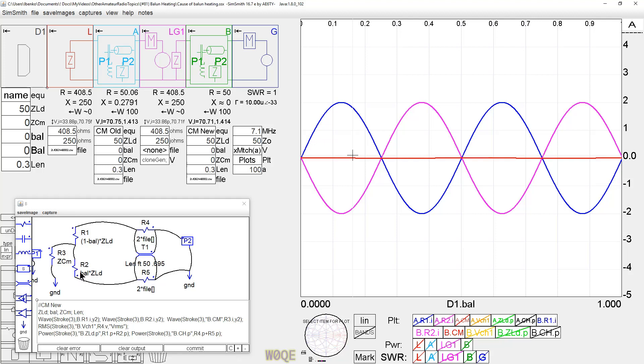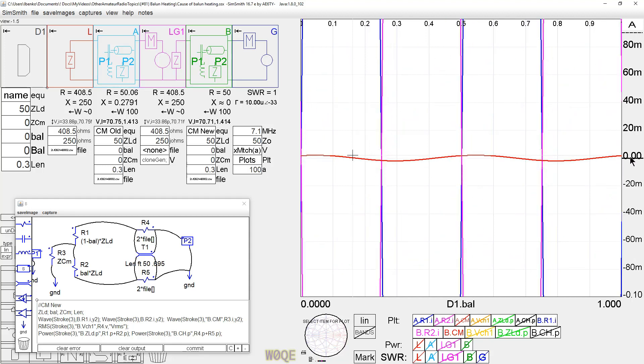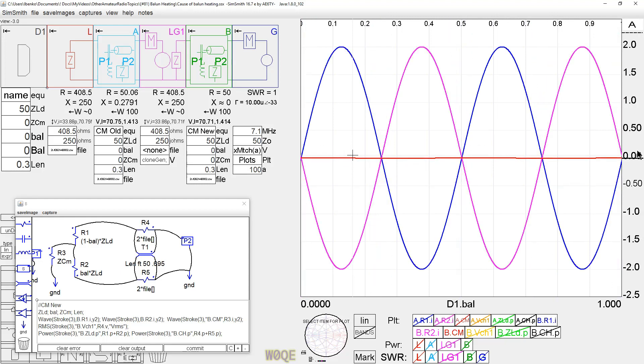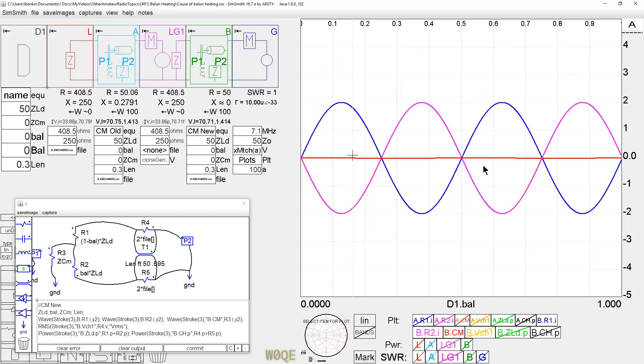So the blue and the pink trace are the current through R1 and R2. And that's the differential current. They're equal, they're out of phase, equally amplitude out of phase. And the amplitude is identical. The common mode current is virtually zero. If we zoom in here enough we see that the common mode current is two milliamps when the differential current has a peak of two amps. So the common mode current is effectively zero.